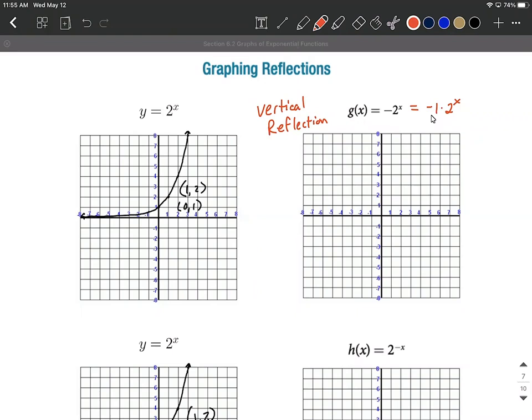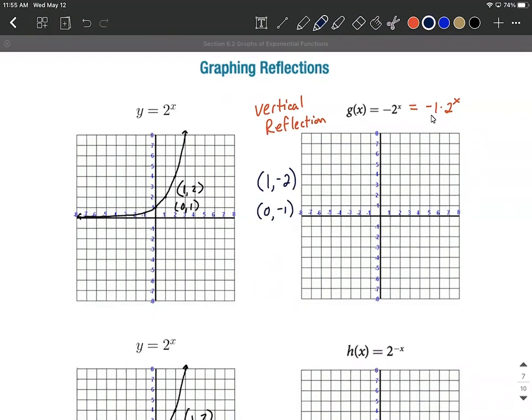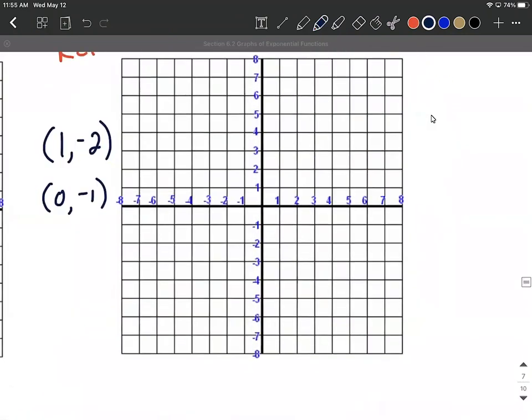So what we can do is we can use our key points that we've already identified on the left-hand side, multiply each one of those y values by negative 1, and we get key points on our new graph. So 2 times negative 1 is negative 2. 1 times negative 1 is negative 1. So our key points here, let's go ahead and plot these. We have 1, negative 2, and we have 0, negative 1.